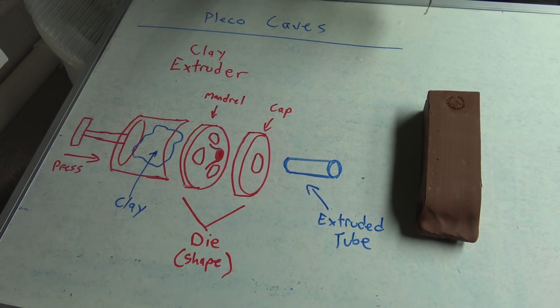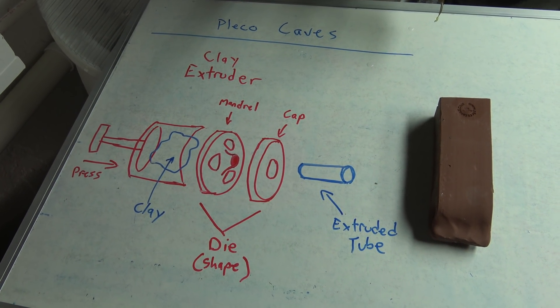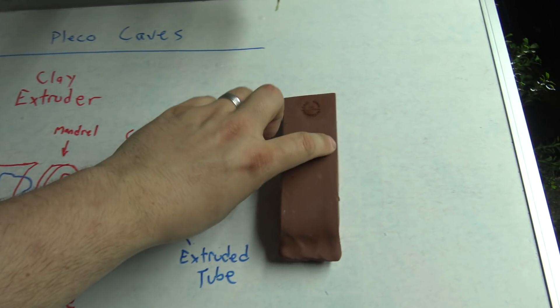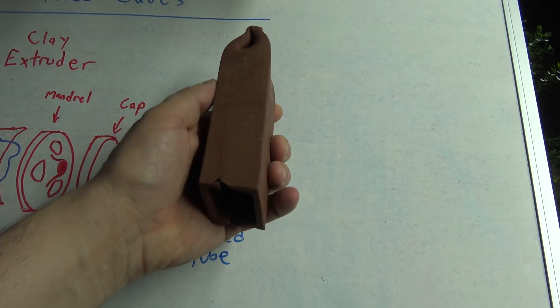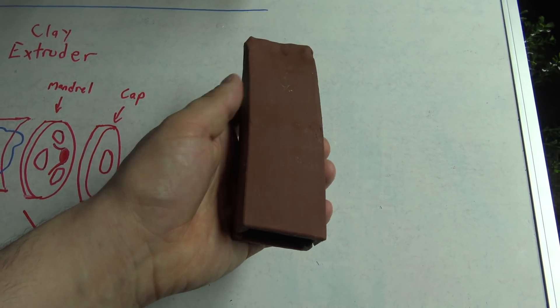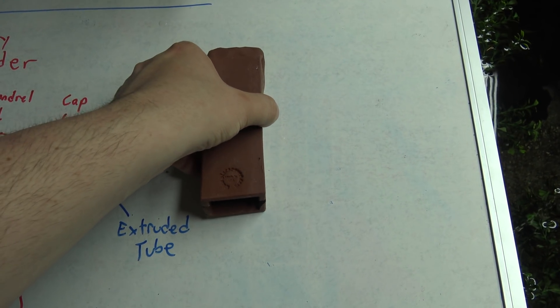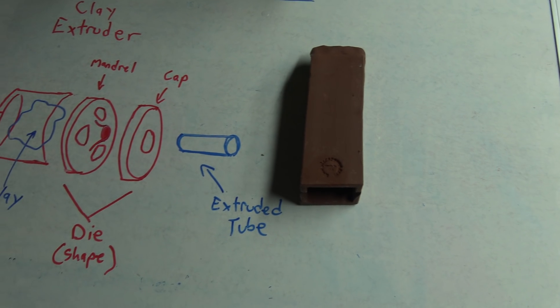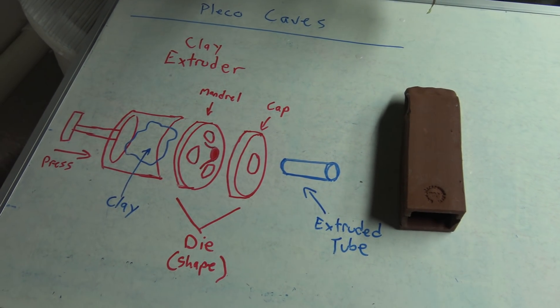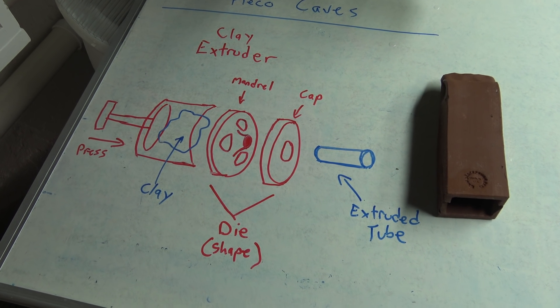So that, in a nutshell, is how a Pleco cave can be very quickly constructed. Obviously, the clay needs to dry, and then it needs to be fired in a kiln. So there's quite a lot to it. But it's one of those things that can be done fairly economically, and on a fairly large scale, because this is a process that is used all over the world for a whole bunch of different materials.